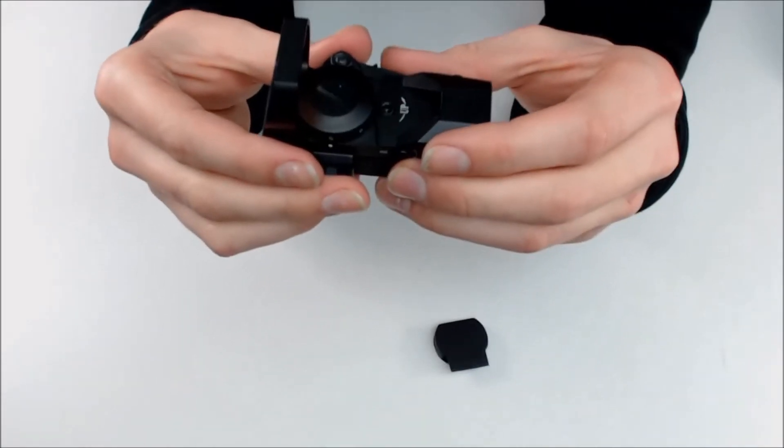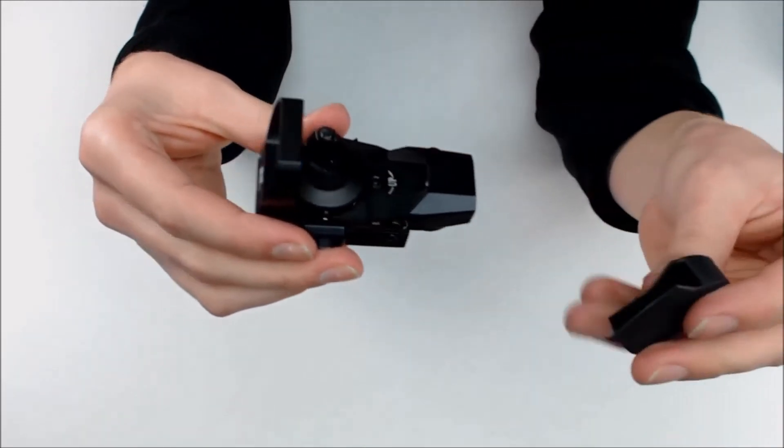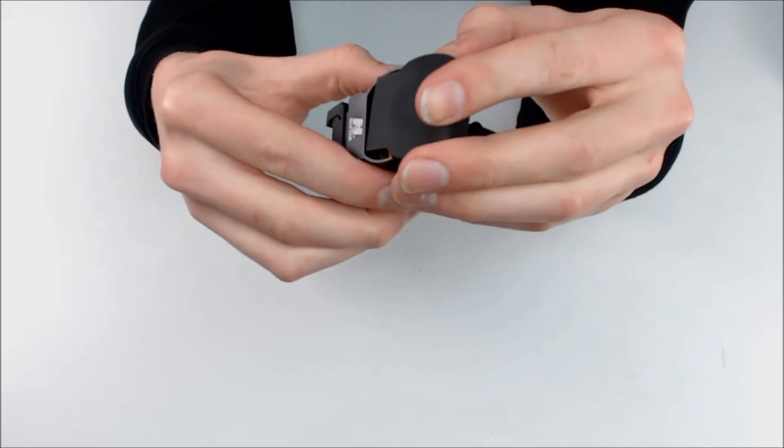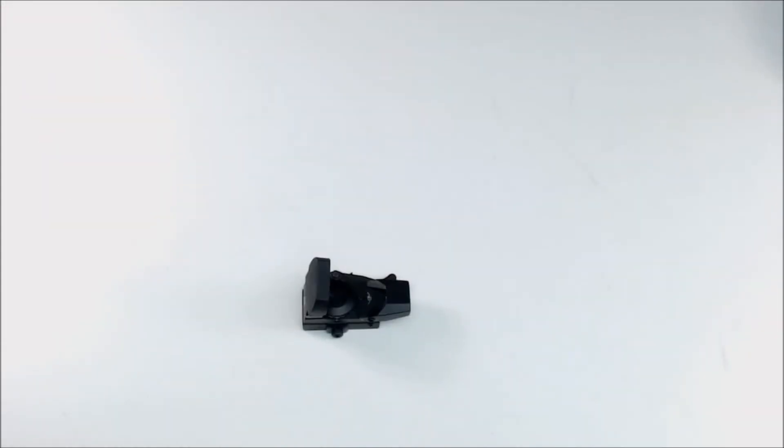This sight also weighs 5.2 ounces and it comes with a cover to cover up your lens. Once again, this is an NC Star Rogue 4 reticle dot sight.